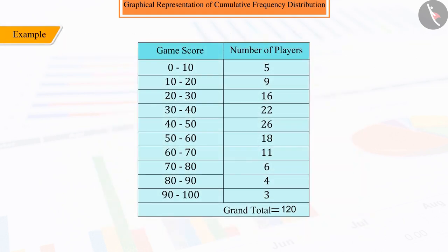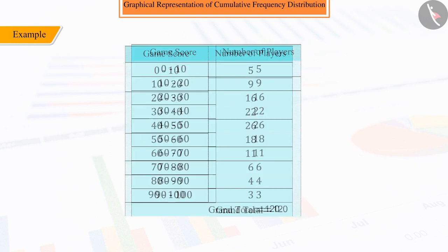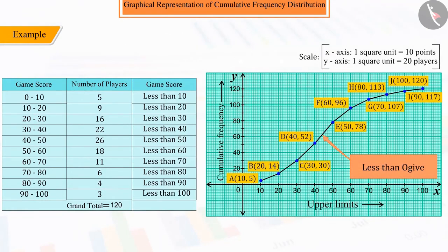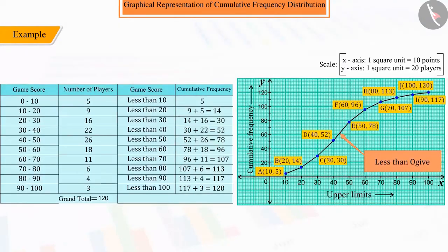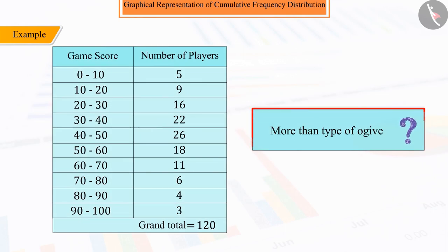As you all know that from the frequency distribution given in the question in the previous video, you created a cumulative frequency distribution of less than type of Ogive. So, can you now draw more than type of Ogive? Let's see.